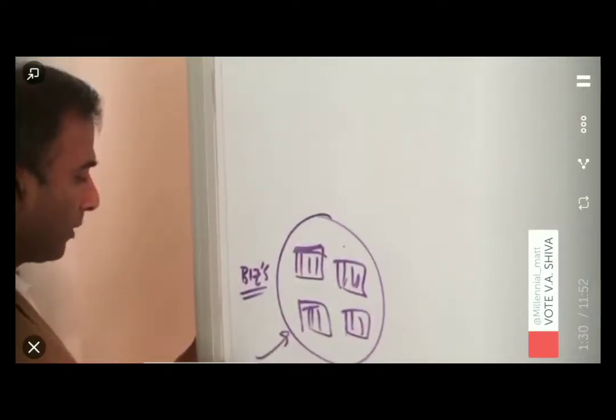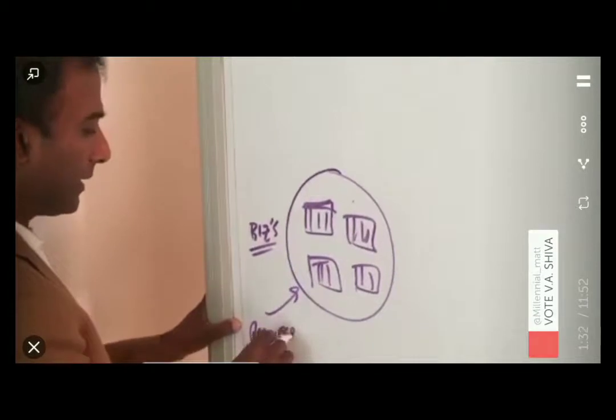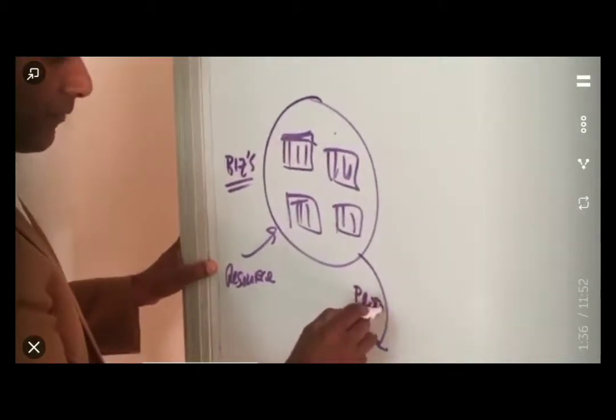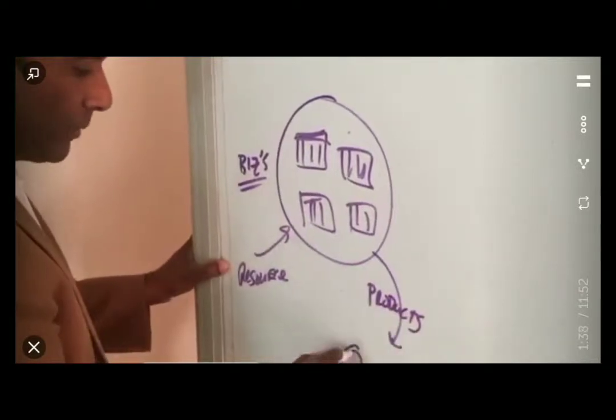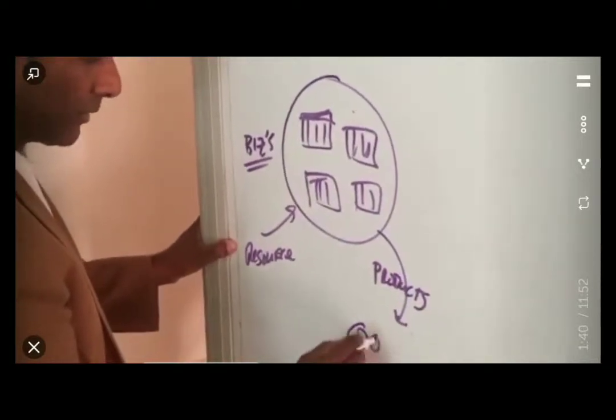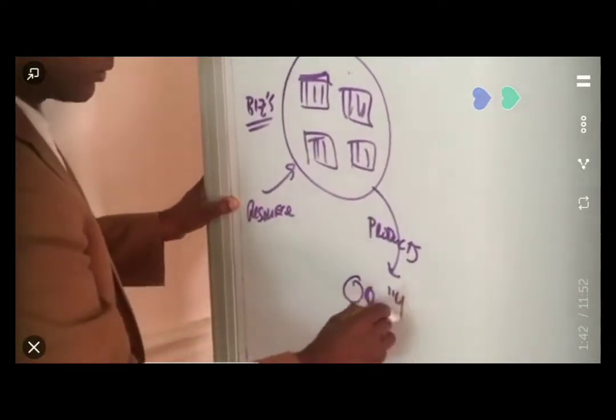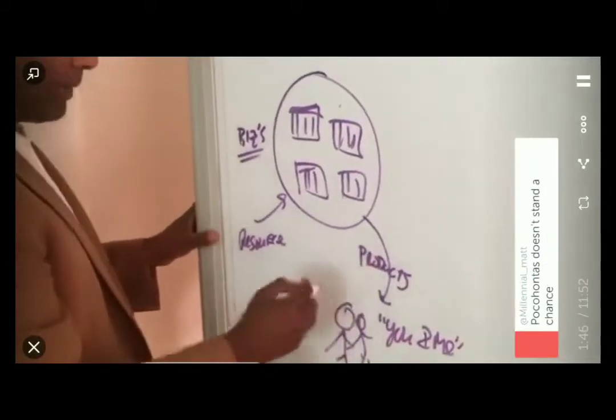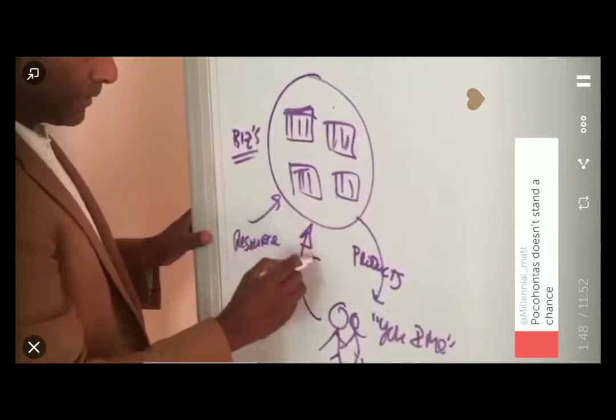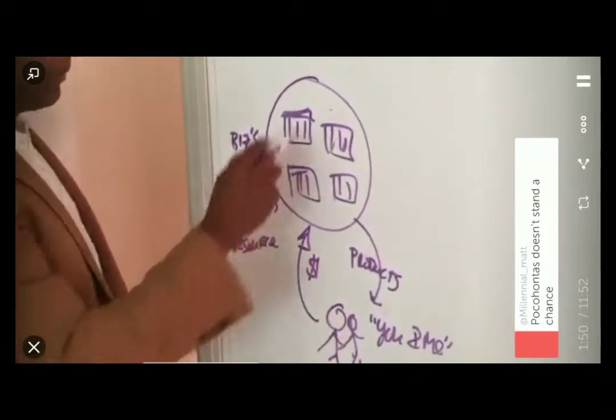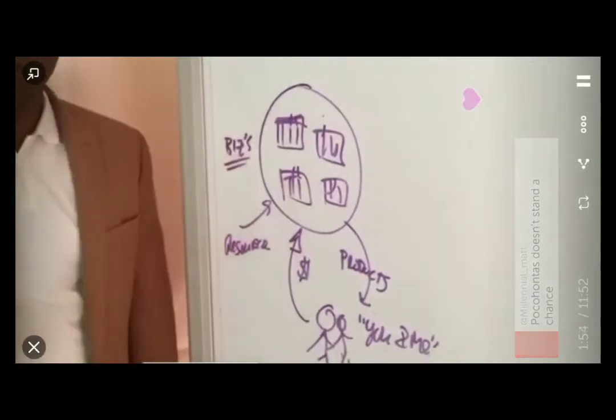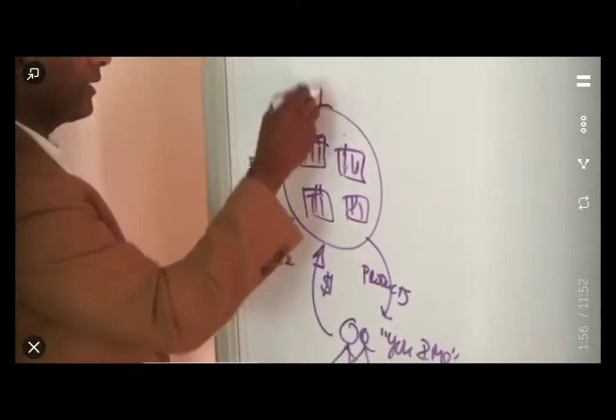They take resources, raw materials, they process stuff, and out comes products from these businesses, which typically go to the consumer. A lot of consumers here, this is you and me over here. And we buy these products, and we pay this company some dollar amount.